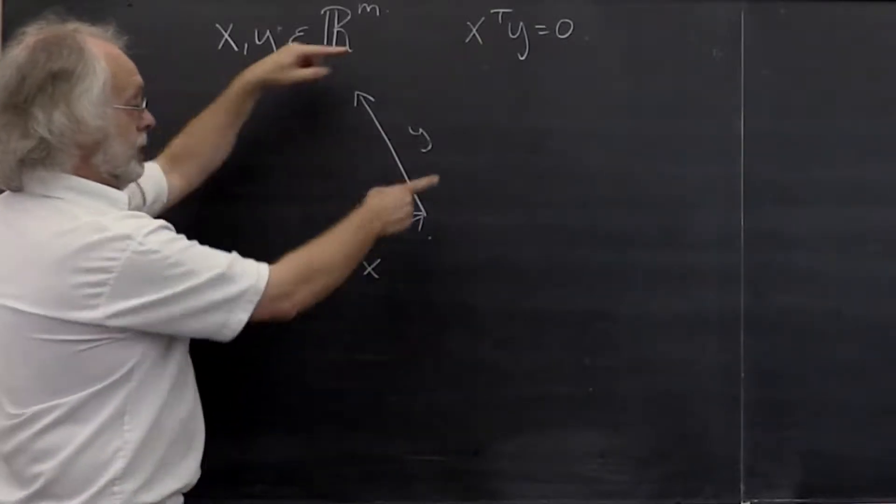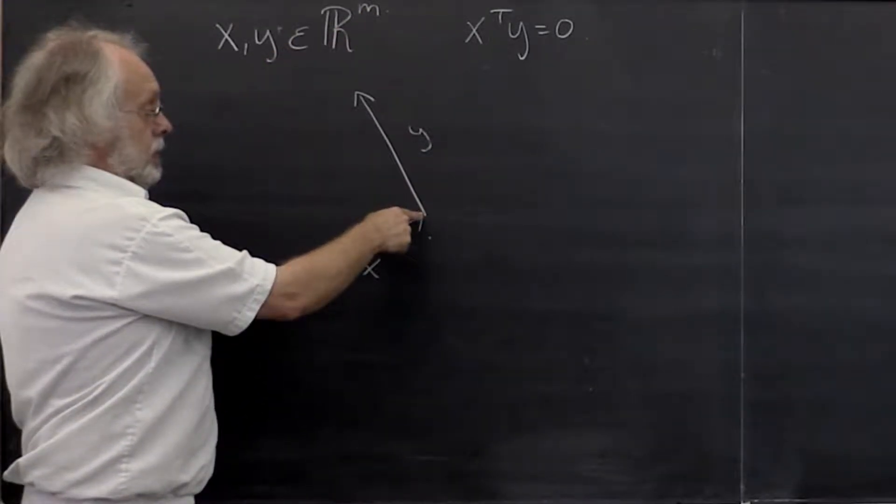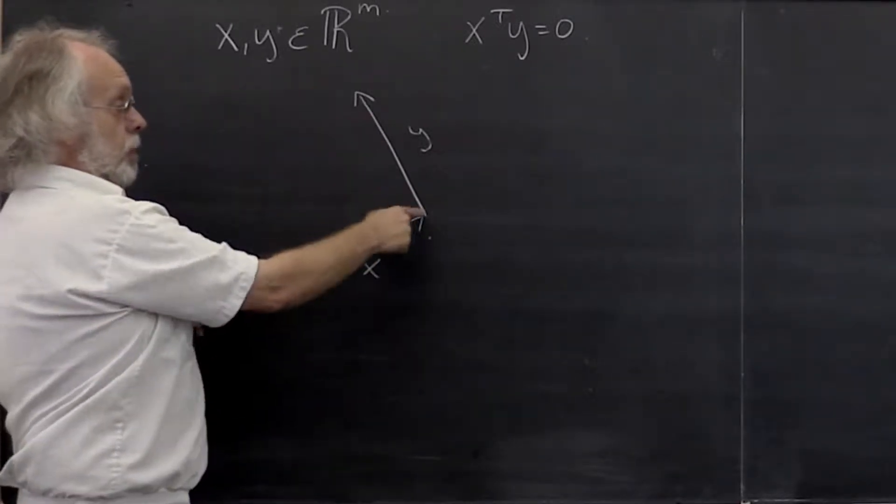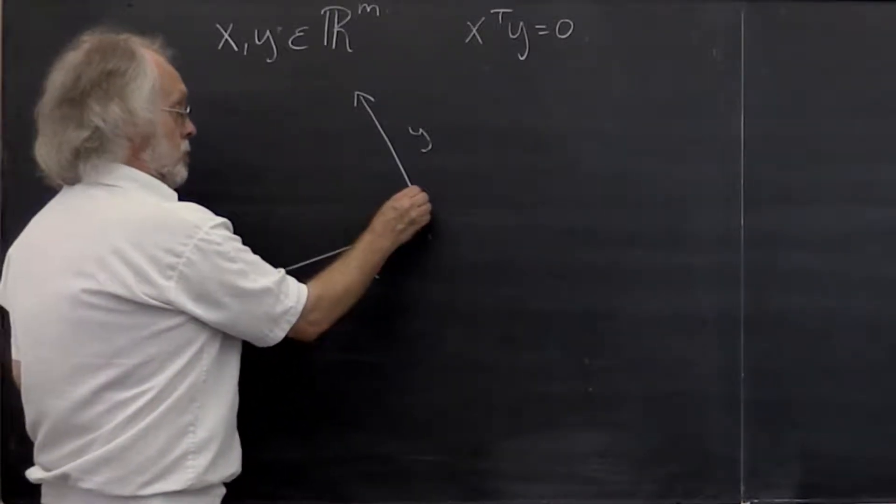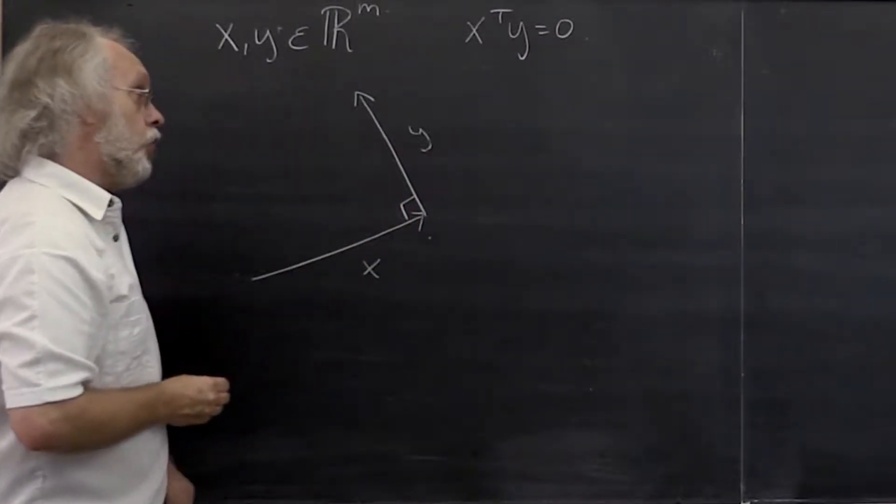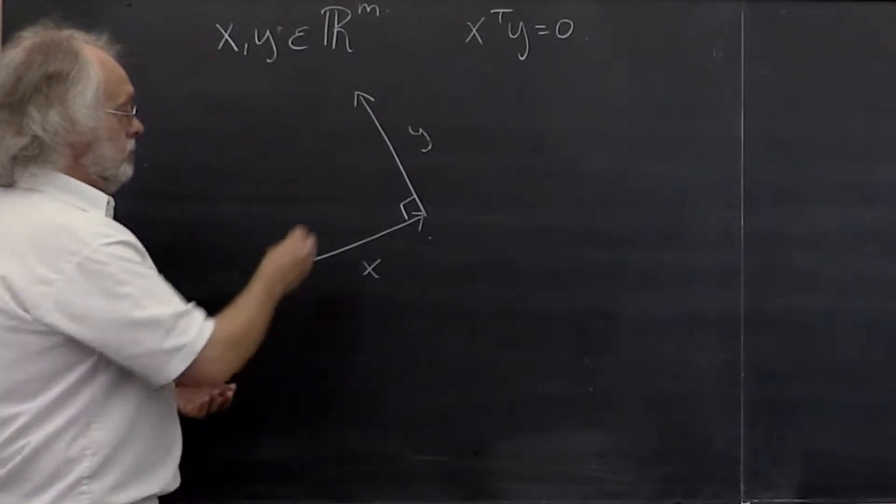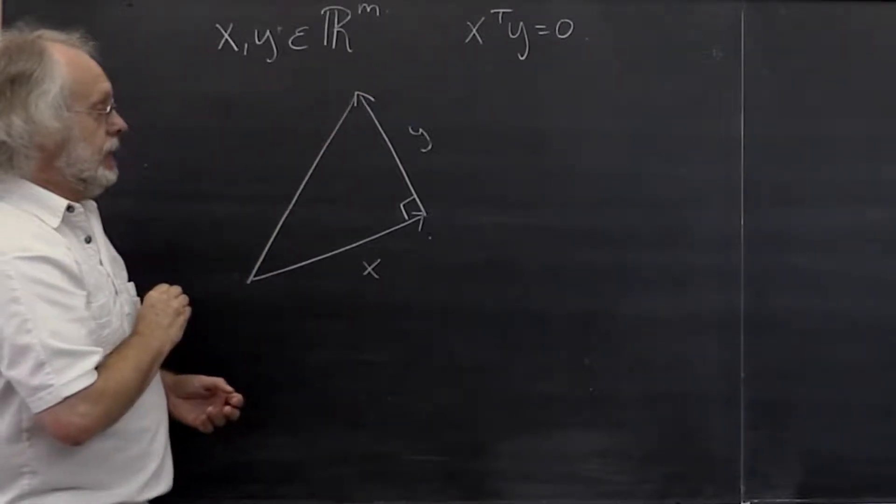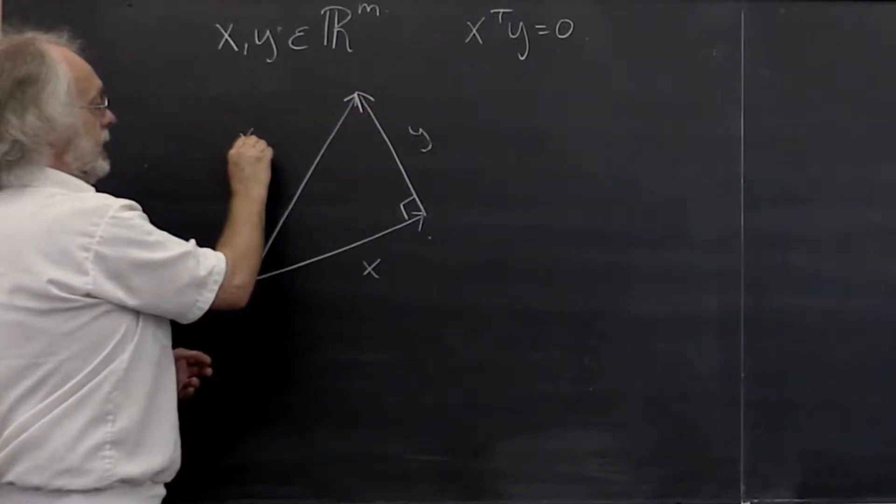And of course we can move vectors anywhere we want. So we can lay them what is known as head to toe to come up with this right here. Now if x and y are perpendicular or orthogonal, then what? Well, then we can complete our triangle. And then we know that this vector here is actually the vector x plus y.